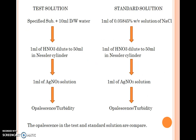For the procedure: the test solution is prepared by taking the specified substance — mostly 1 gram — and dissolving it in 10 ml of distilled water. Then add 1 ml of dilute nitric acid and make up the volume to 50 ml in a Nessler cylinder. After that, add 1 ml of silver nitrate solution and stir it. You will get opalescence if the sample contains chloride impurities.